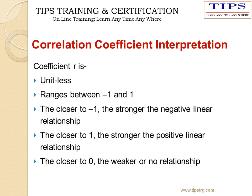What is the interpretation of the correlation coefficient? The correlation coefficient R is a unitless value. It ranges from minus 1 to plus 1. Closer to minus 1 represents a stronger and negative correlation.